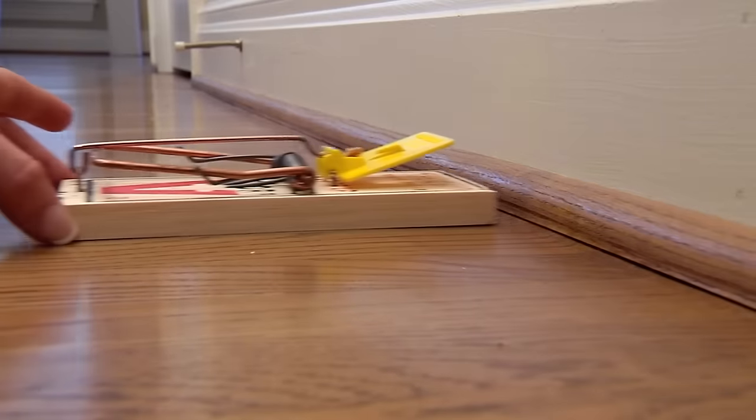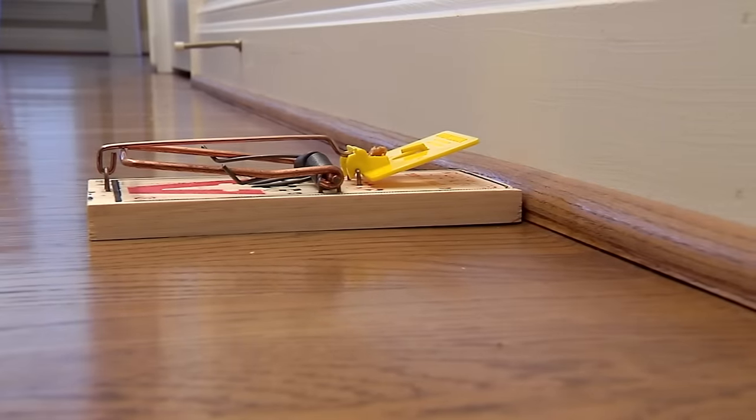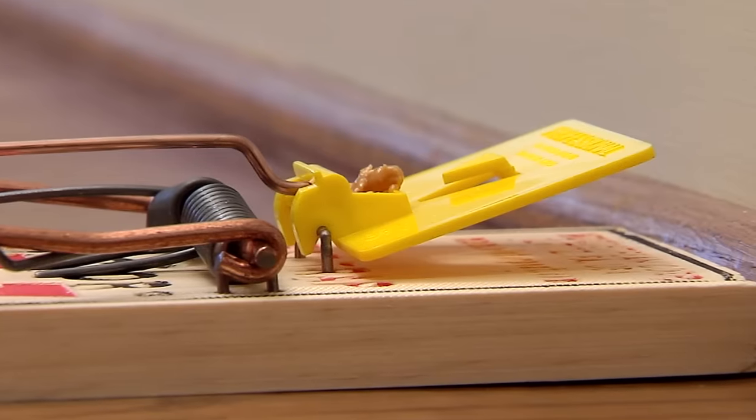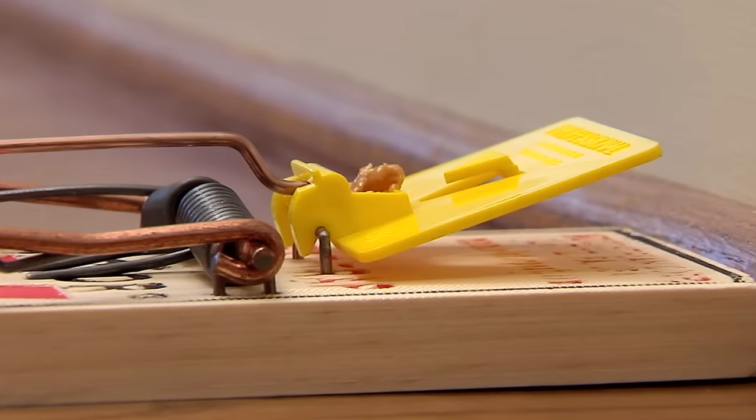Place the trap where you've seen signs of rodent activity or along the wall where rodents primarily travel. The end of the trap where the yellow petal is baited should be placed flush against the wall.